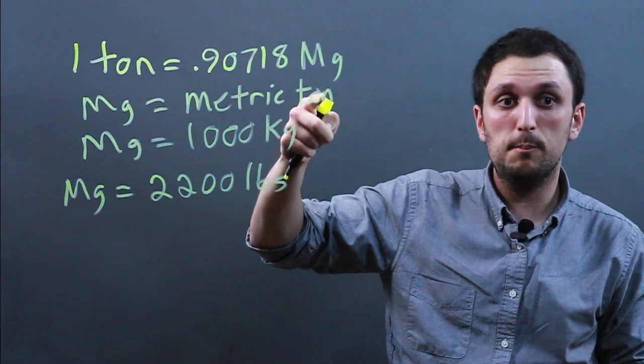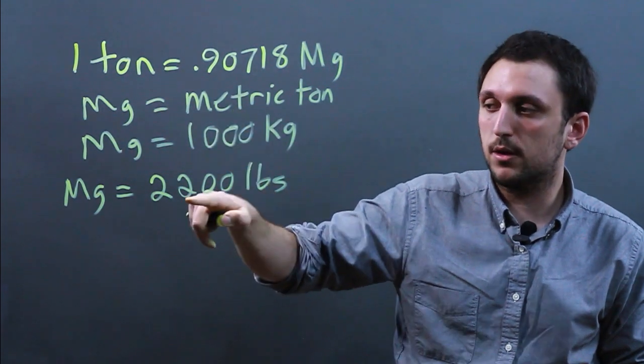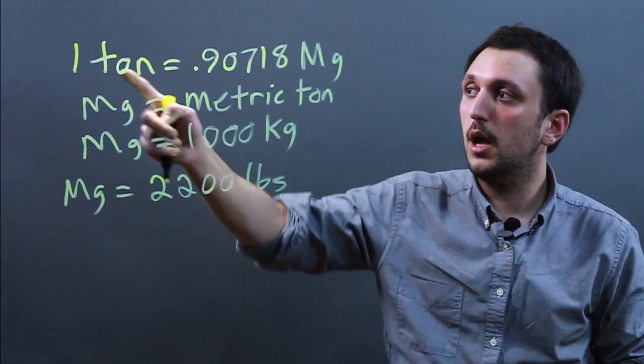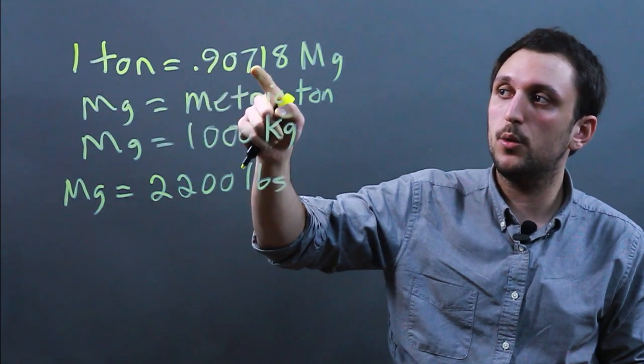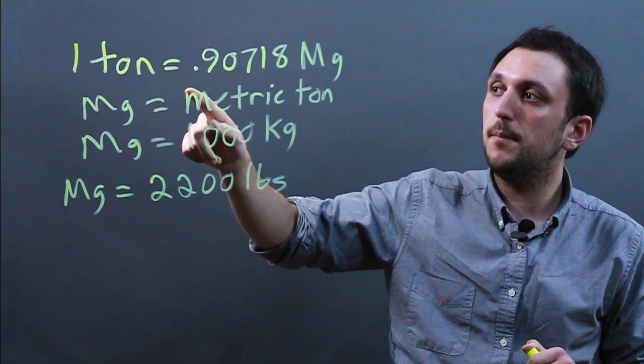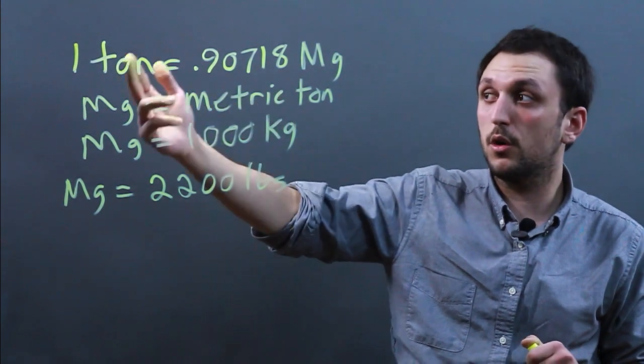A megagram is also known as a metric ton which remember is bigger, 2,200 pounds, than a ton which is about 2,000 pounds. And 1 ton equals 0.90718 megagrams meaning for every 9 megagrams there are 10 tons.